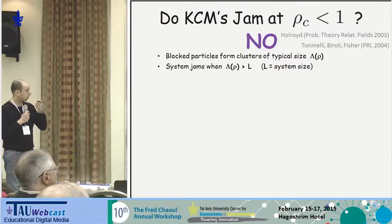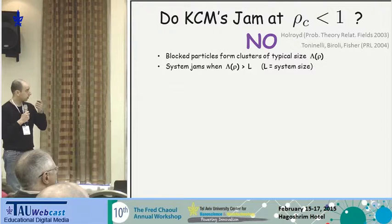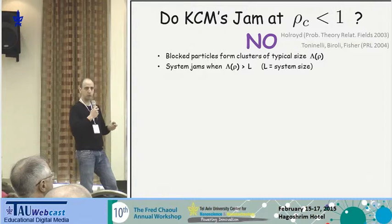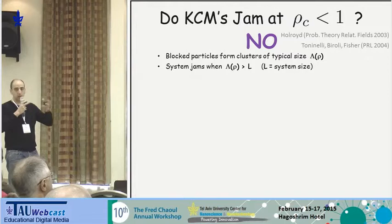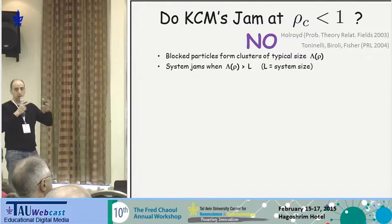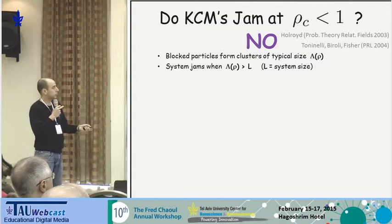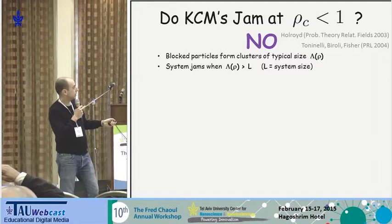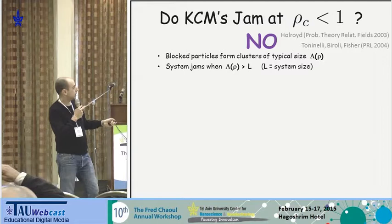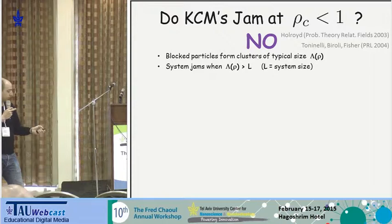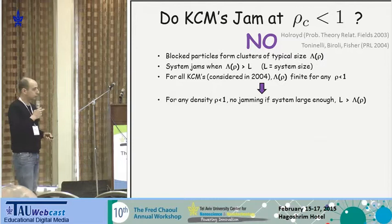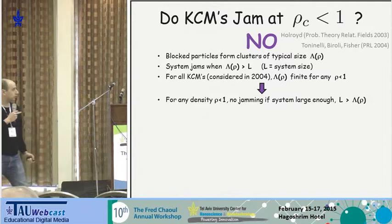The idea behind this proof is that particles are blocked because their neighbors are blocked, and so on, so blocked particles form clusters of mutually blocked particles. In order for a particle to move, it needs some particle at the edge of that cluster to move first. You can identify the typical size of these clusters as a function of density — the system would be jammed if this typical length scale is larger than the system size. For all kinetically constrained models considered at that time, this typical length scale is finite for any finite density, so if your system is large enough it will never get jammed no matter how large the density is.